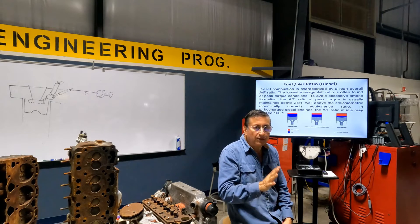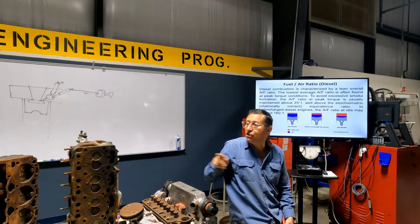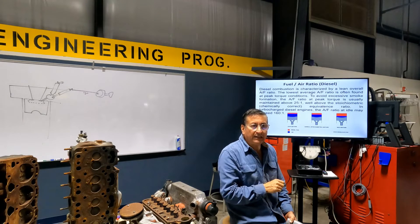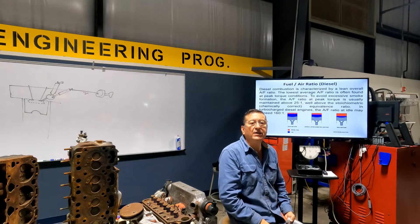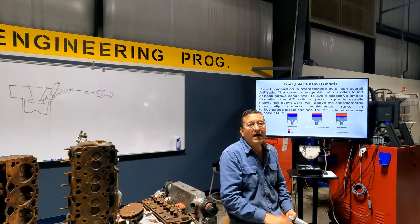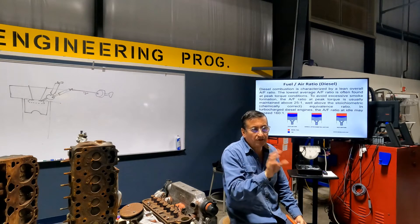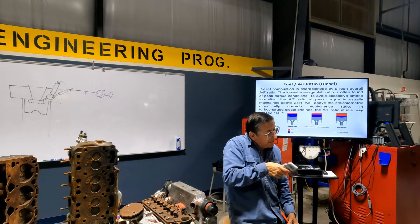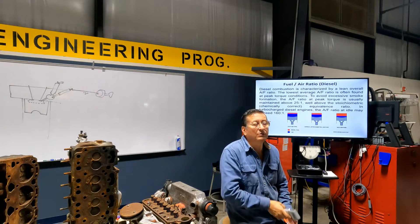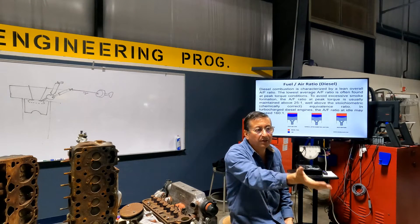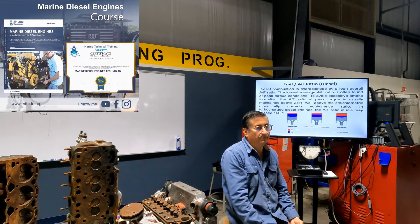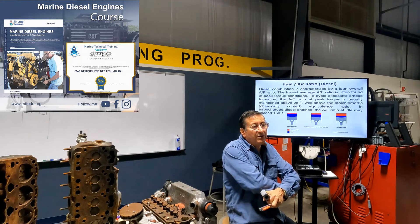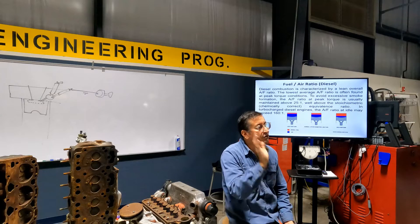If you continue running the engine, you'll get a code on the dashboard and the captain will say, 'Engineer, check the starboard engine — I have a code for high head temperature.' The sensor detected high temperature in the head. When the engineer checks, he finds high temperature around cylinder number three. The recommendation is to immediately stop the engine, because if you continue running it with high temperature in that cylinder, the piston will expand, lock the engine, and destroy it.